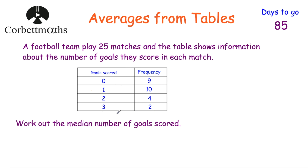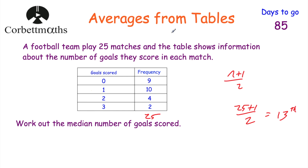Finally, work out the median number of goals scored. Using the formula (n + 1) ÷ 2: there are 25 matches, so (25 + 1) ÷ 2 = 13. We're looking for the 13th value. There are nine zeros, then ten ones — after nine zeros we start writing ones, and the 13th value falls within the ones. So the median number of goals scored is 1.